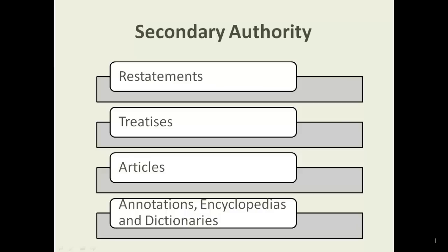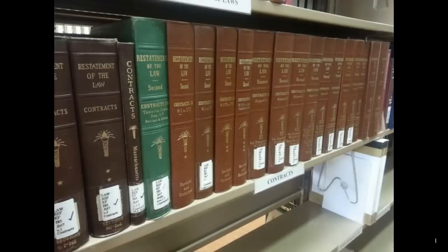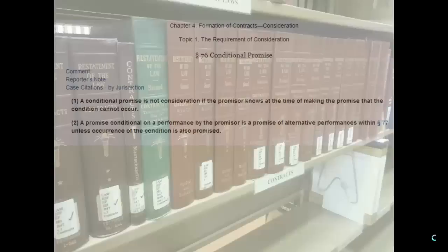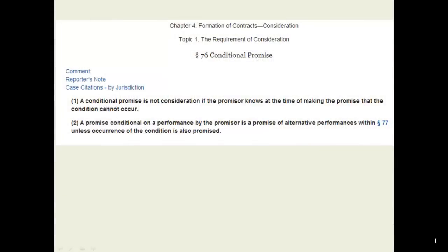Examples of commentary you will come into contact with in your first year of law school include restatements of law, treatises, articles, annotations, encyclopedias, and dictionaries. I will briefly review these sources in order of their depth of treatment and level of persuasiveness. A restatement of law is usually a multi-volume review of an area of law written by a group of experts.